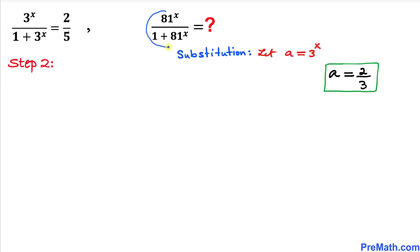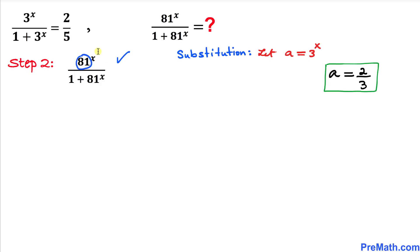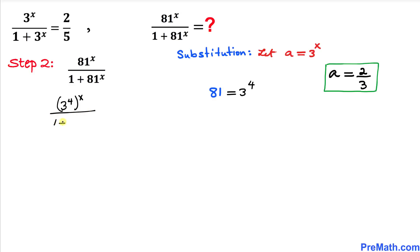Now let's focus on the expression 81^x divided by (1 + 81^x). Let's focus on the base 81 — it can be written as 3^4. So we can rewrite the expression as (3^4)^x divided by (1 + (3^4)^x).